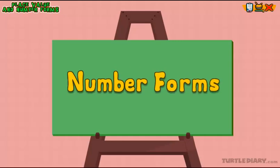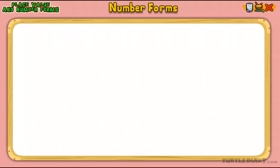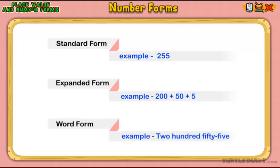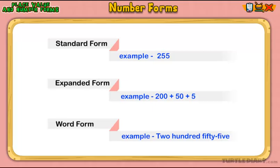Number forms. Let's take a look at how we write, read, and expand numbers. Numbers can be written in three different forms: standard, expanded, or word form.